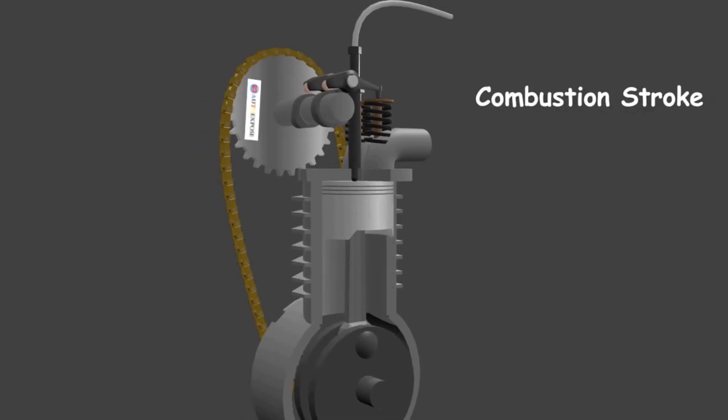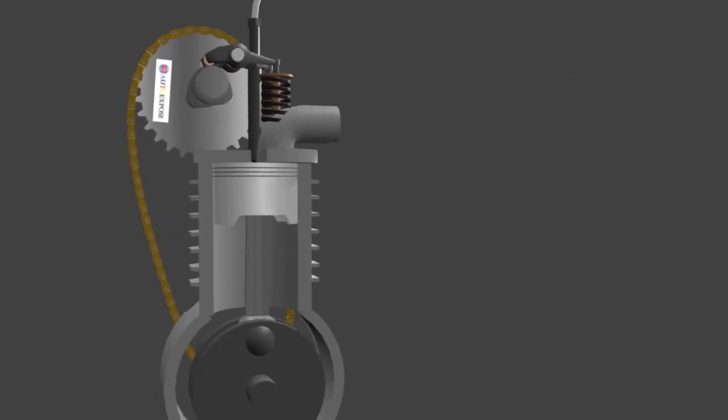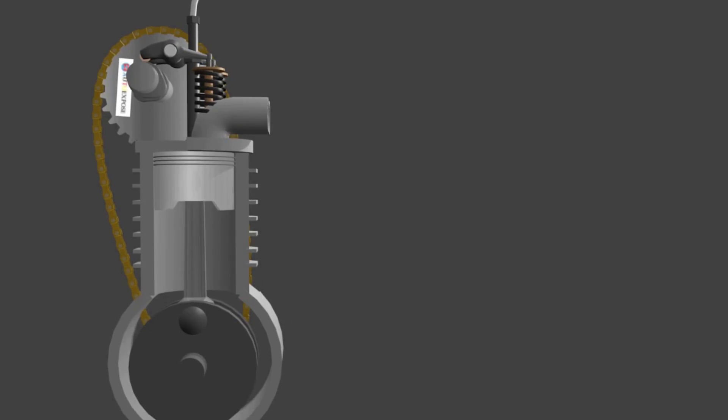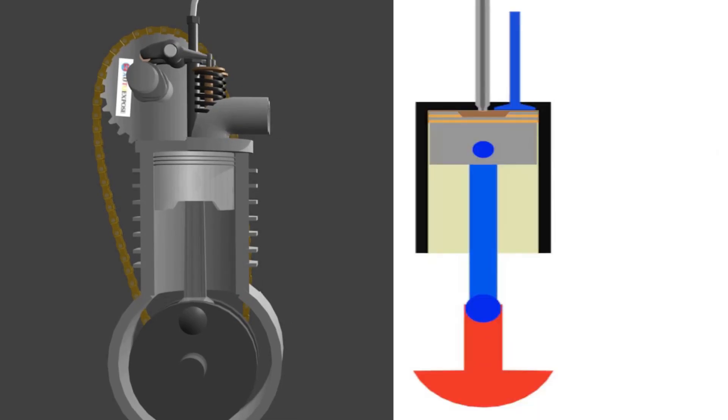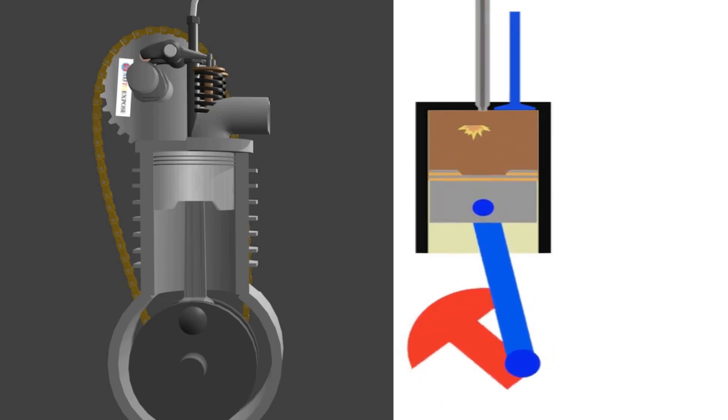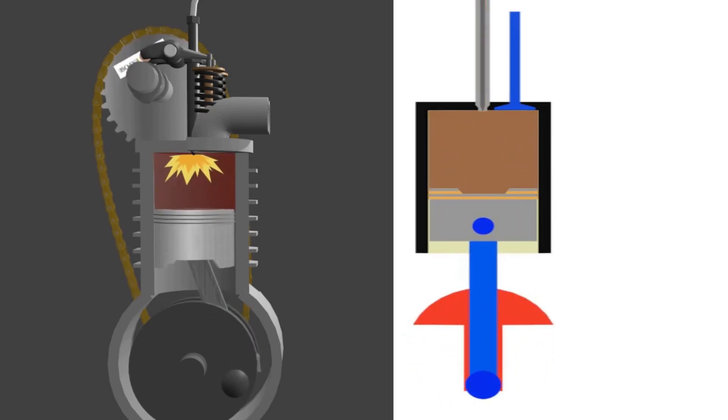At this stage, diesel fuel is injected into the combustion chamber. As explained earlier, the fuel burns immediately because the air temperature exceeds the fuel flashpoint. It results in combustion in form of expansion force that pushes the piston down.